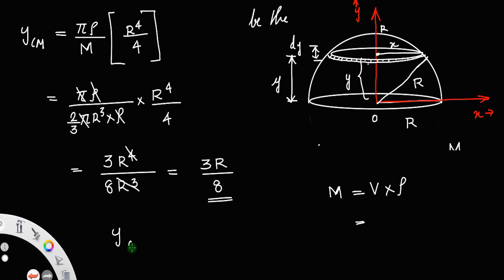So y_cm is actually at a distance of 3 by 8 of the radius, 3 by 8 times r. Thank you very much.